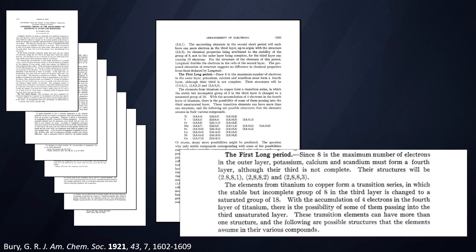And in this paper, he says the following: The elements from titanium to copper form a transition series, in which the stable but incomplete group of 8 in the third layer is changed to a saturated group of 18.